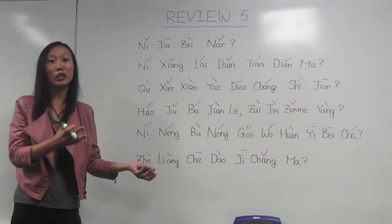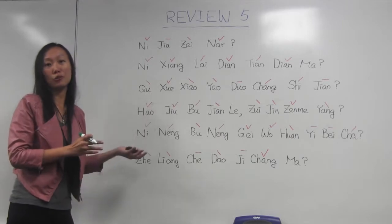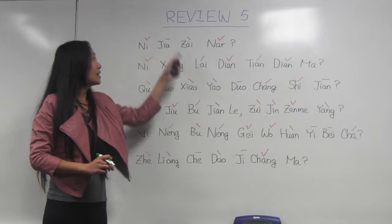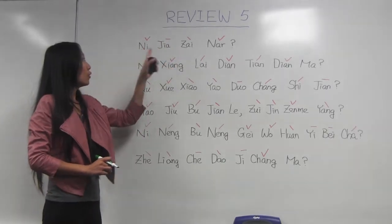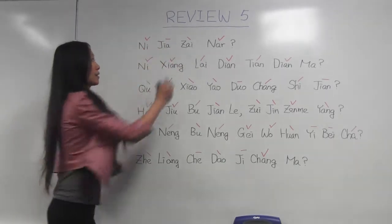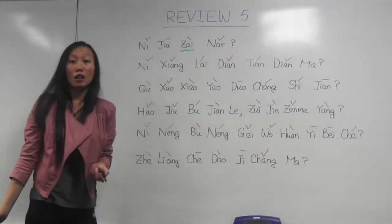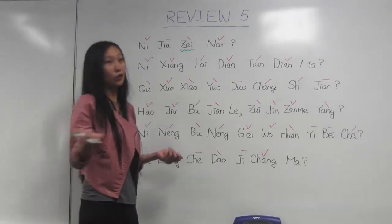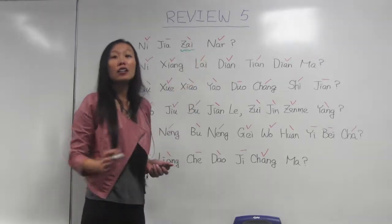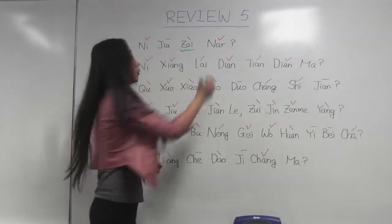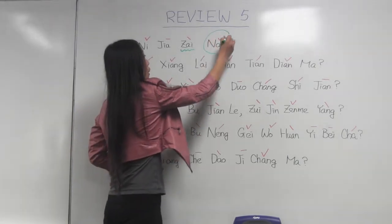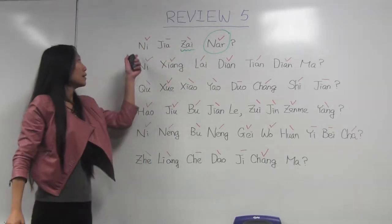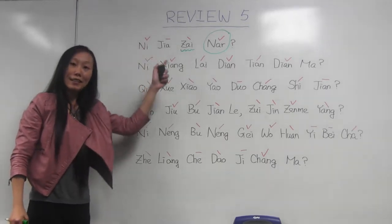So let's practice how we use all those question words. First one: 你家在哪 — 'your home at where.' 在 is the place marker, meaning 'at' in English. 哪 means 'where' — that is the question word. So: where is your home at? 你家在哪?